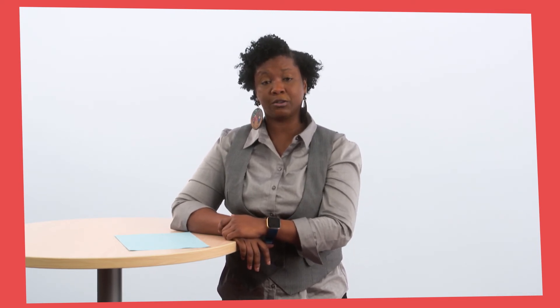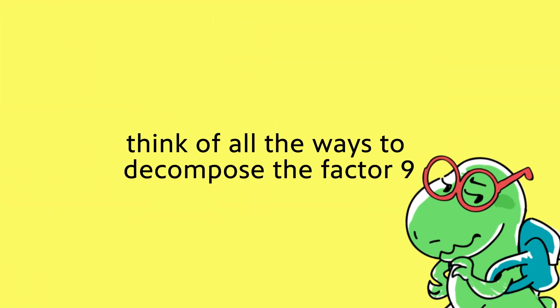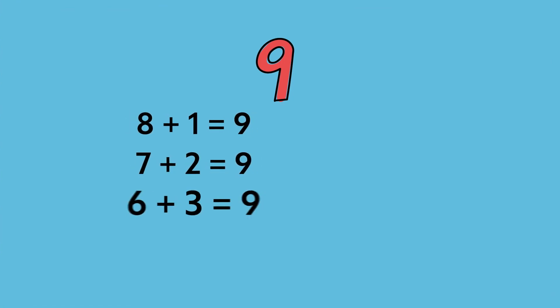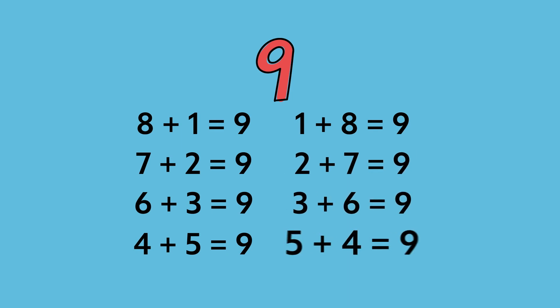Let's decompose nine times six another way by decomposing the nine — this is so much fun! What are the different ways that we can break apart the factor nine? I'll give you some time to think about that. Turn and talk to a friend or trusted adult. You are doing an excellent job, mathematicians. We can break apart the nine factor into eight plus one, seven plus two, six plus three, four plus five, and so on. That's a lot of ways to break apart the factor of nine!